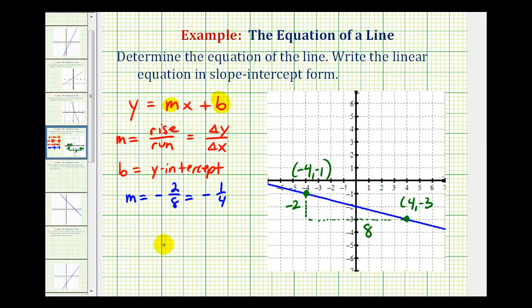To determine the y-intercept, notice the line crosses the y-axis at negative two. So our y-intercept is negative two, which means b equals negative two.